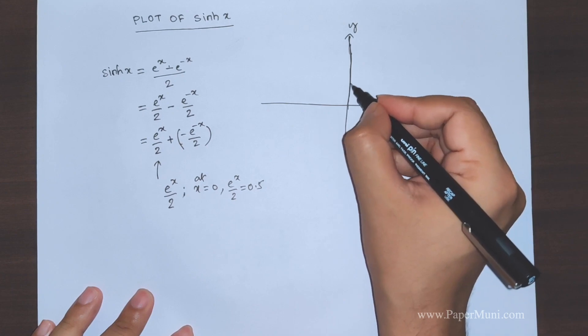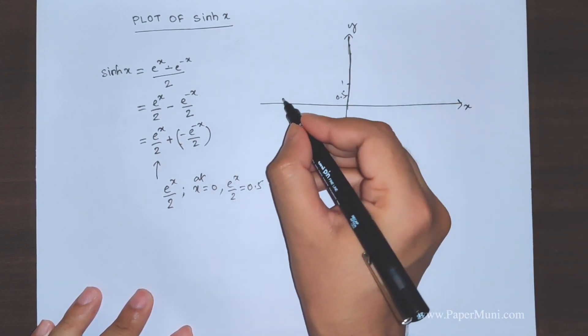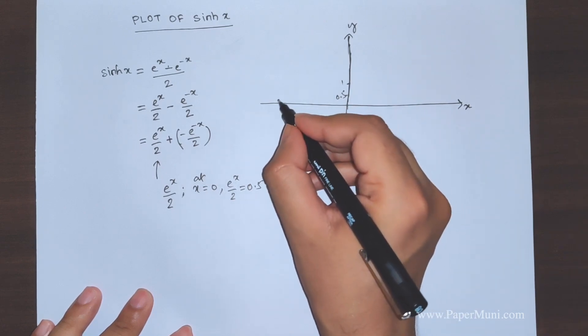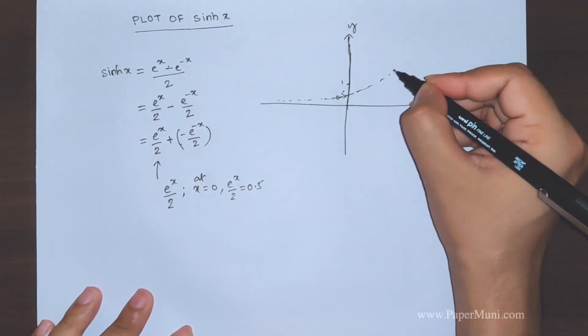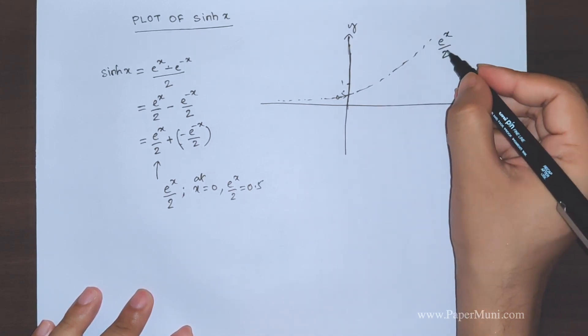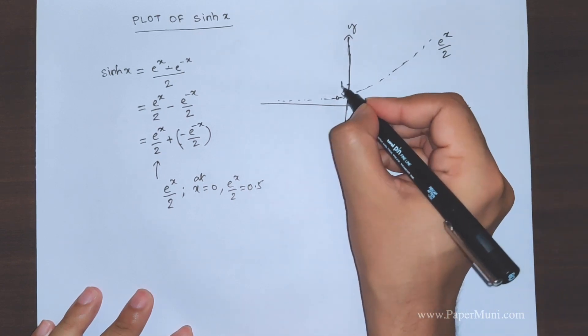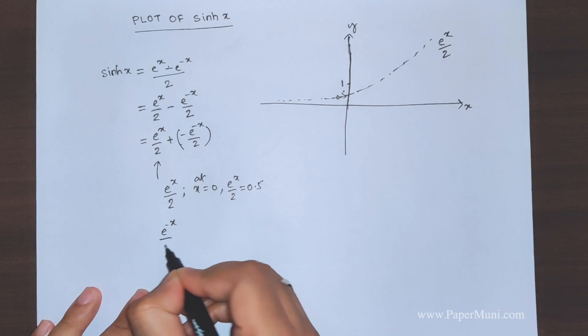This is exponential graph, this graph will pass through 0.5. This is exponential e to power x by 2. Now the next part is e to power minus x by 2.